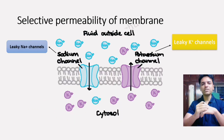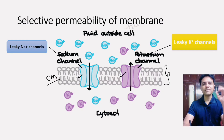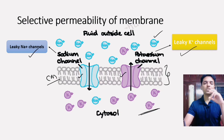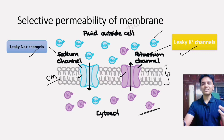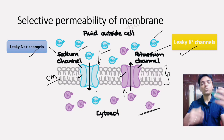The cell membrane has ion channels called leaky ion channels — there are leaky sodium channels and leaky potassium channels. The concentration of potassium inside the cell is higher, and the concentration of sodium outside the cell is higher. Because of this concentration gradient, potassium tends to move from inside to outside, while sodium tends to move from outside to inside.